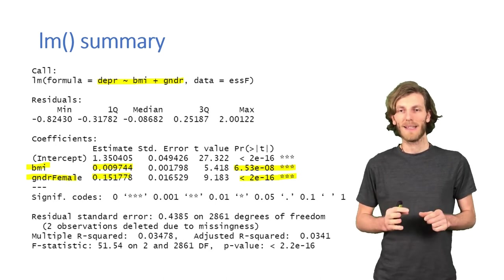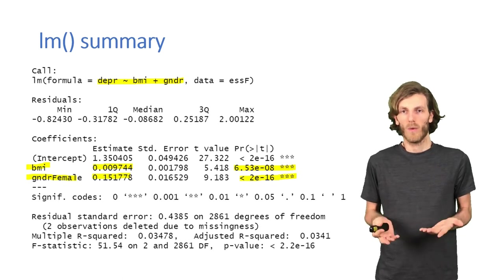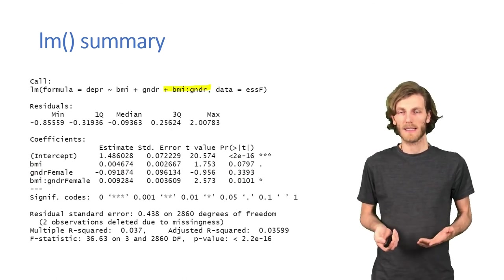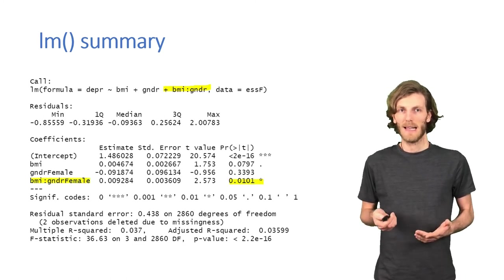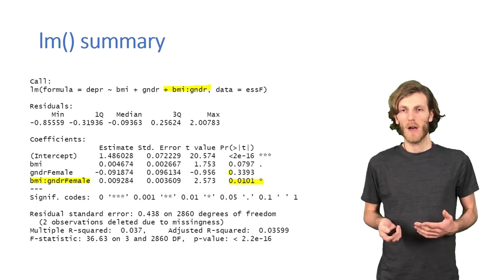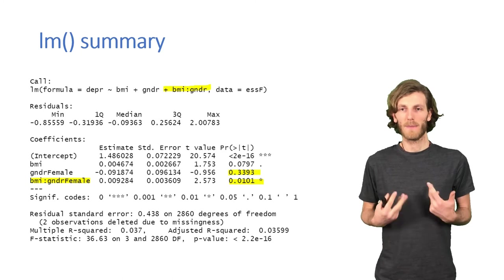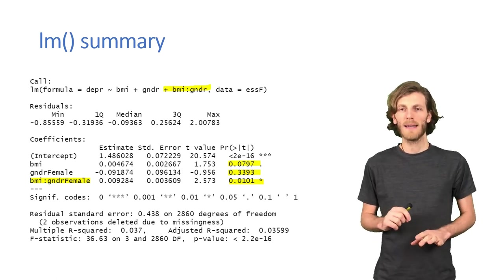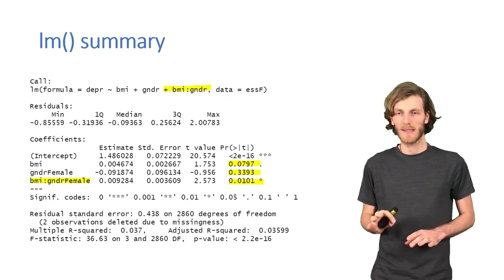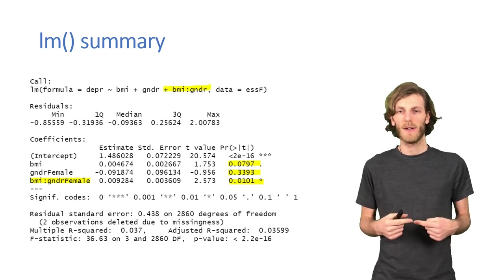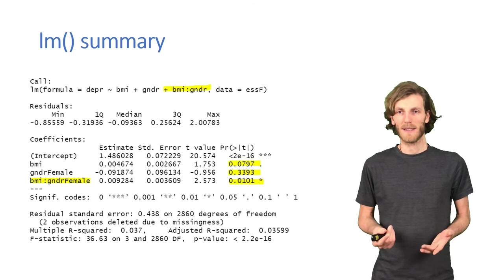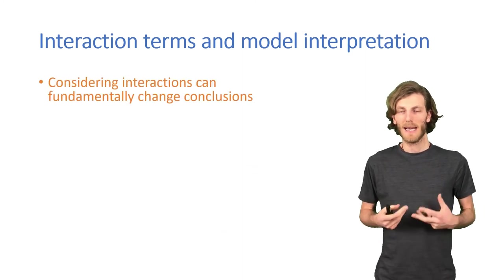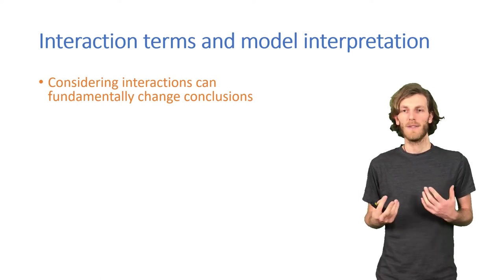However, if there is an interaction and we don't have the interaction in our model, then we are missing out on important information. So it's worth running the model also, including the interaction term. And now we see that in fact the interaction is significant, while the effect of the respondent being female is no longer significant. And the association of BMI with the frequency of experiencing negative emotions for men, since women are now accounted for in the interaction term, is only marginally significant. So quite a different pattern here.